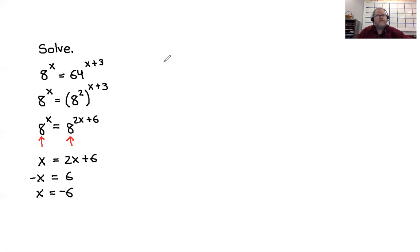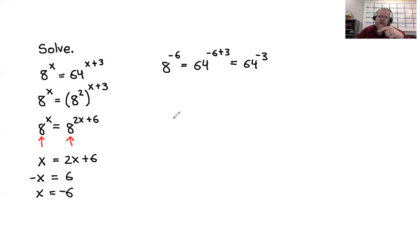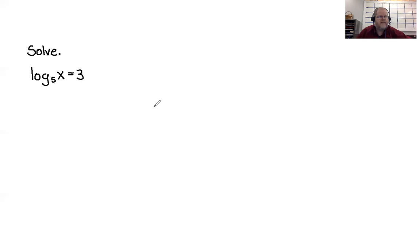Let's verify: plugging x equals negative 6 back in gives 8 to the negative 6 equals 64 to the negative 6 plus 3, which is 64 to the negative 3. Take your calculator, raise 8 to the negative 6 and raise 64 to the negative 3 — you should get exactly the same result. So x equals negative 6 is the solution.